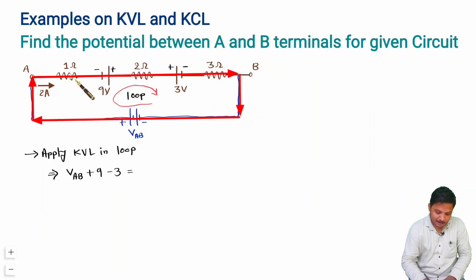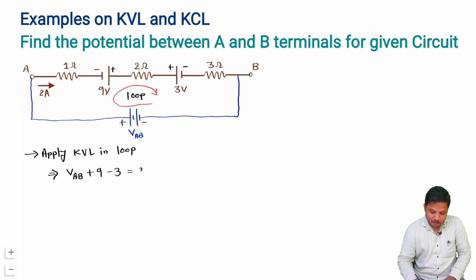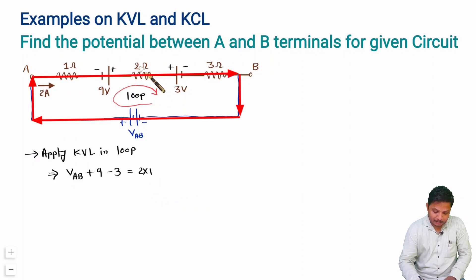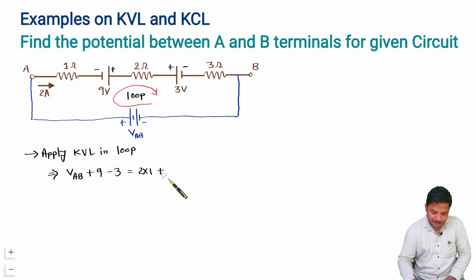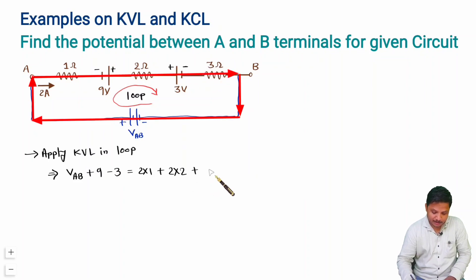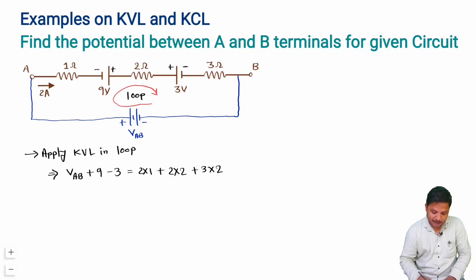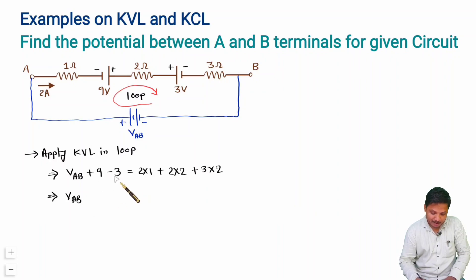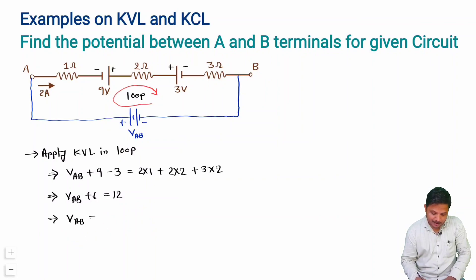The potential drop across the 1 ohm resistance is 2 amperes into 1 ohm, which is 2×1. Plus the drop across 2 ohm is 2×2, plus the drop across 3 ohm is 3×2, since 2 ampere current is given. Simplifying: VAB + 9 − 3 = 2 + 4 + 6 = 12, so 12 − 6 gives VAB = 6 volts.